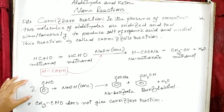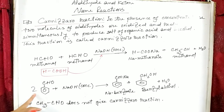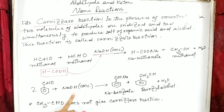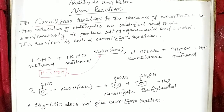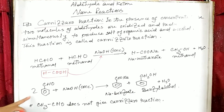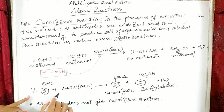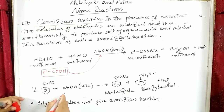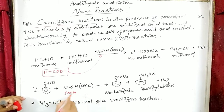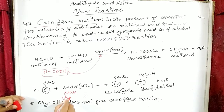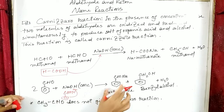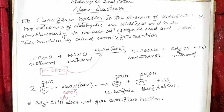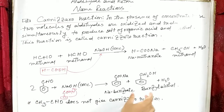Another example of Cannizzaro reaction: two molecules of benzaldehyde react together in the presence of concentrated sodium hydroxide to produce sodium benzoate and benzyl alcohol. In this case, one molecule of benzaldehyde is oxidized to produce benzoic acid, which then reacts with sodium hydroxide to produce sodium benzoate. Another molecule of benzaldehyde is reduced to produce benzyl alcohol.